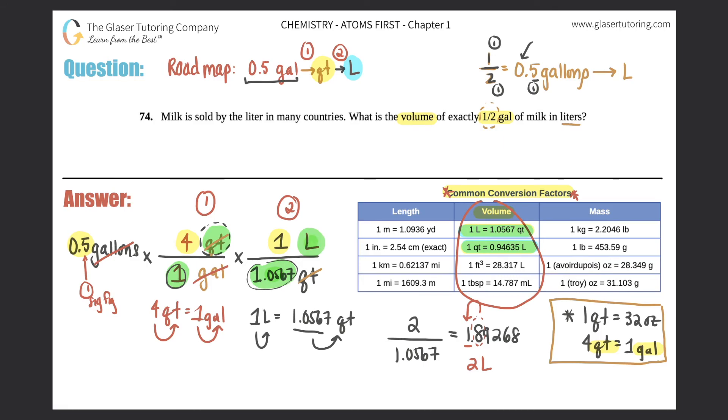That's it. So technically, 0.5 gallon is equivalent to 2 liters. They're equivalent in the amount of volume that you have.